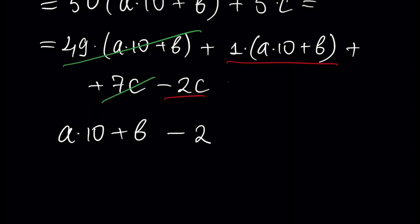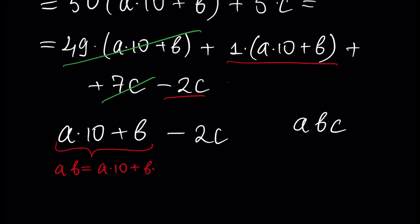Everything depends on A times 10 plus B, minus 2C. But our initial number was ABC, and A times 10 plus B is the decimal representation of number AB, and minus 2C is minus 2 times the last digit, as we did earlier.